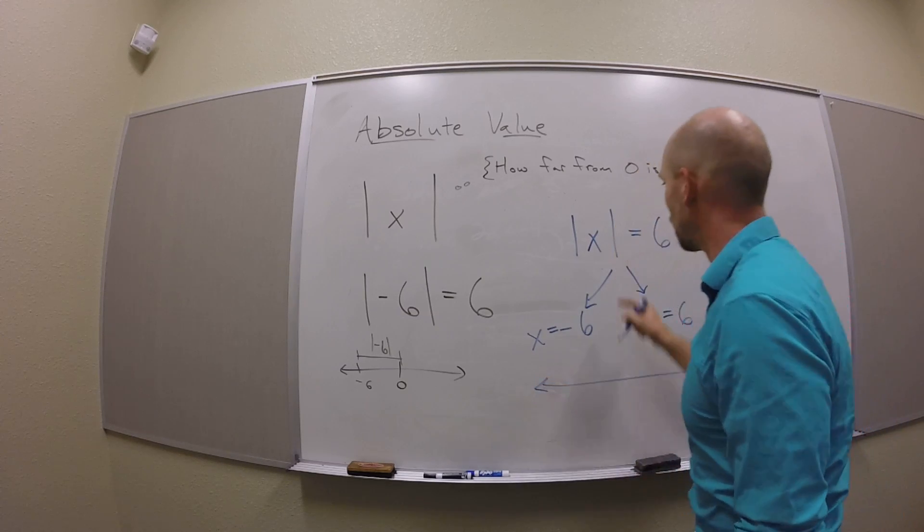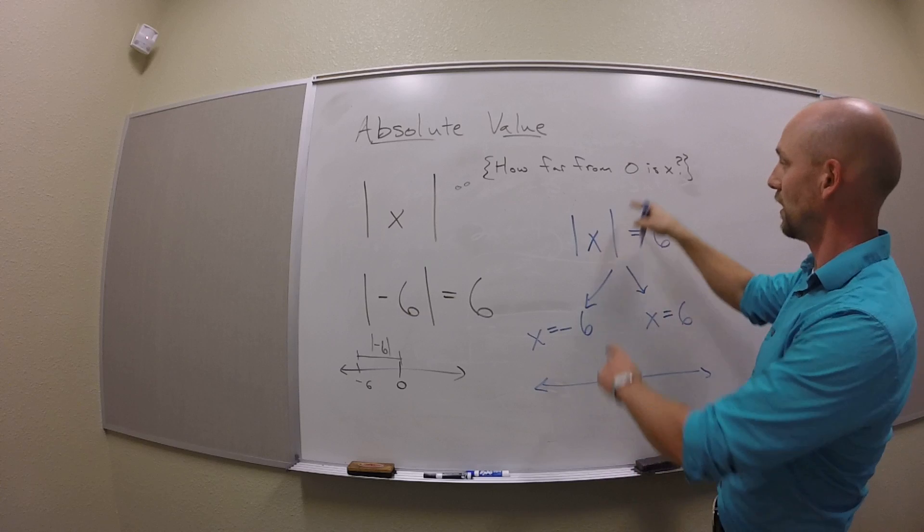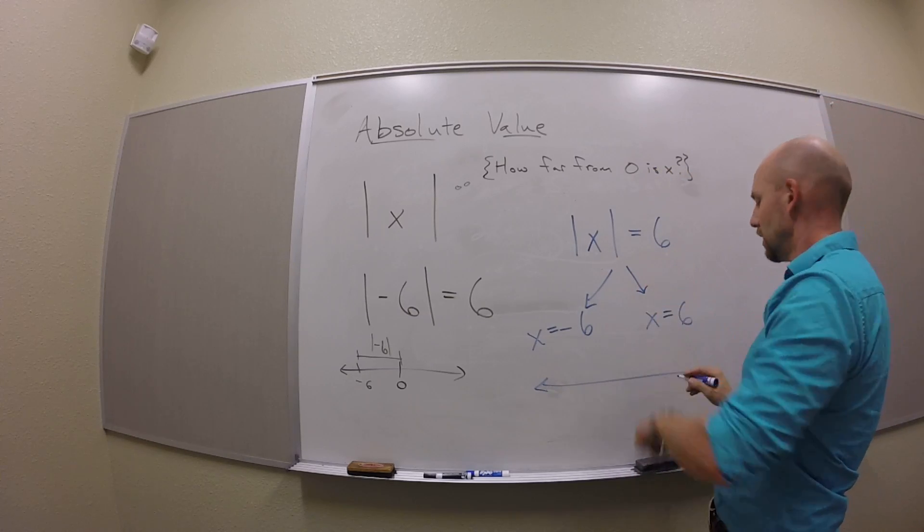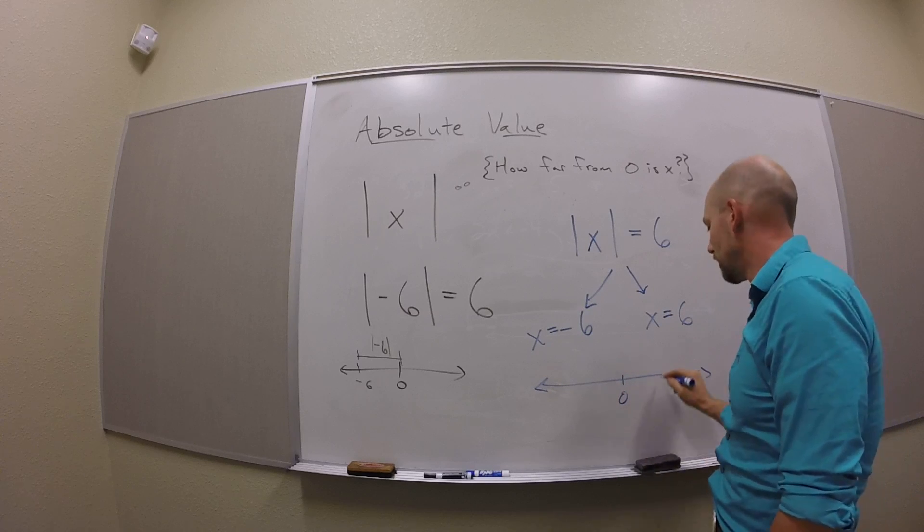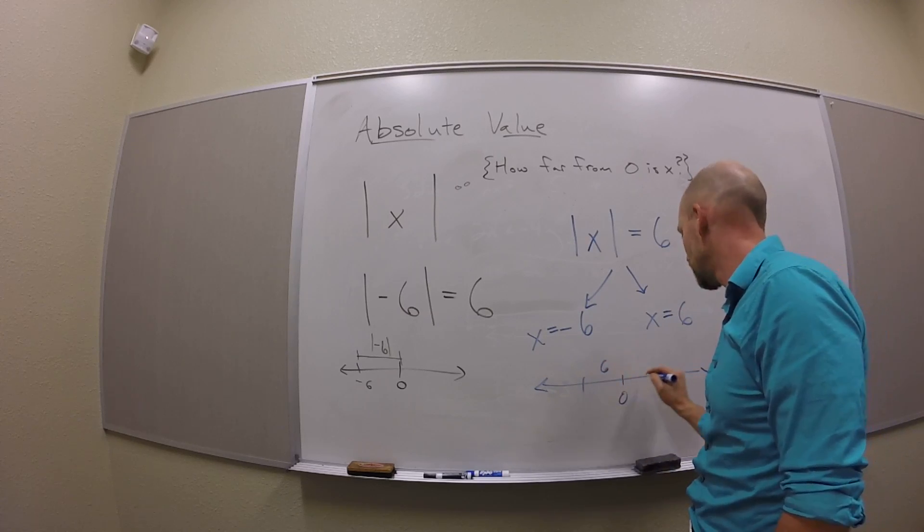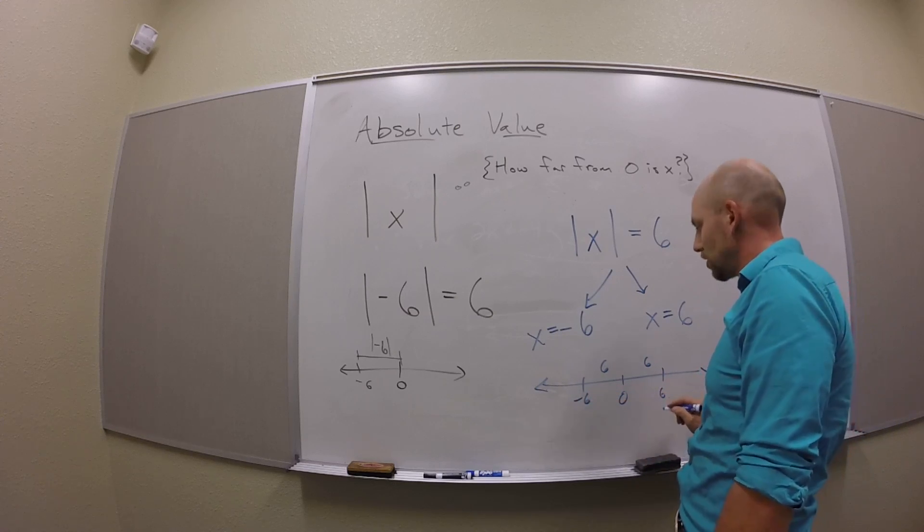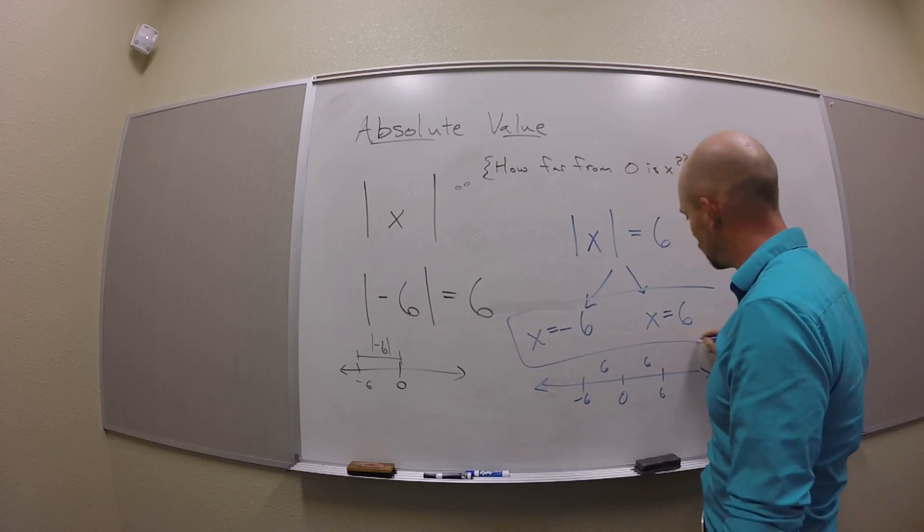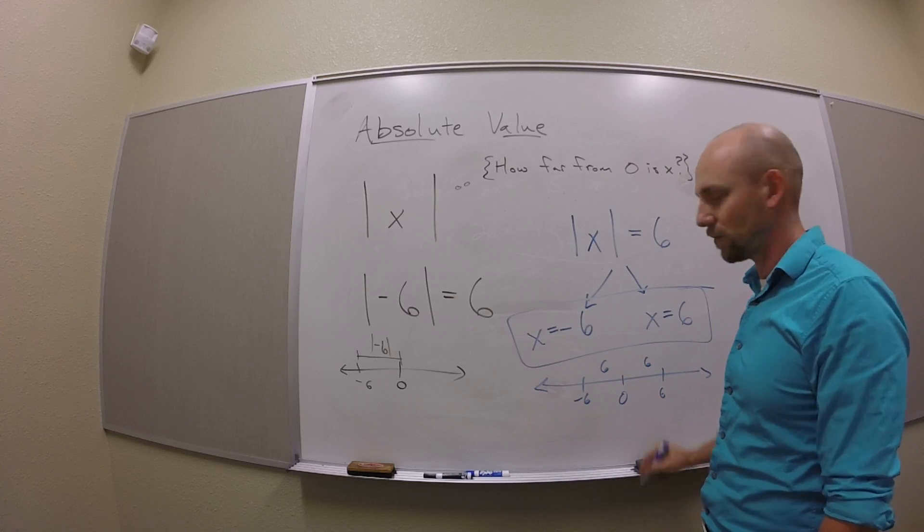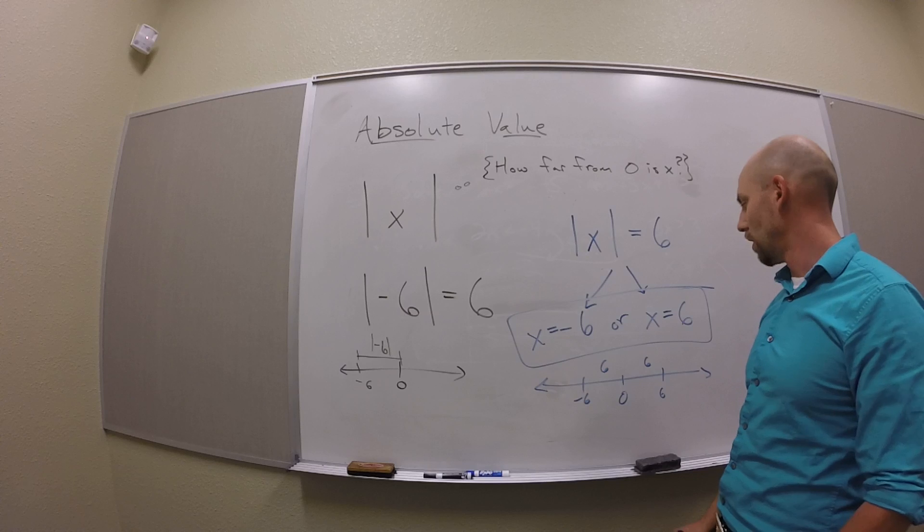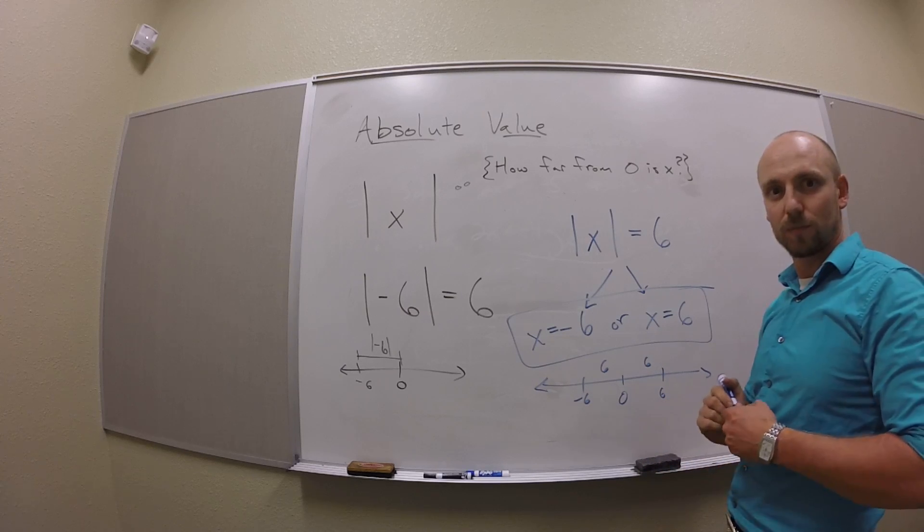Remember, what I'm doing is I'm saying, x, how far is x from 0? And the answer was apparently 6. So here's 0, and there's two things that are 6 units away from 0. There's minus 6 over here, and 6 over there. So I get these two answers. Either x is negative 6 or x is positive 6.